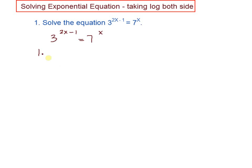You will have something like this: log 3 power 2x minus 1 equal to log 7 power x. Now you put log on the left-hand side and the right-hand side.